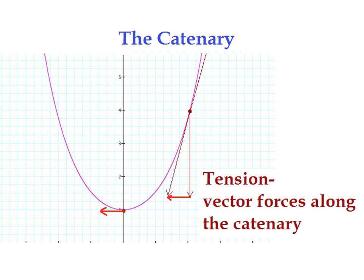The name of the curve that we're studying is the catenary. It comes from the Latin term catena, which is Latin for chain. The vector forces along the catenary we will refer to as tension, or the tension forces. Here is any point P on the catenary. The very lowest point, indicated here by the laser, or the minimum point, we will call that point A.